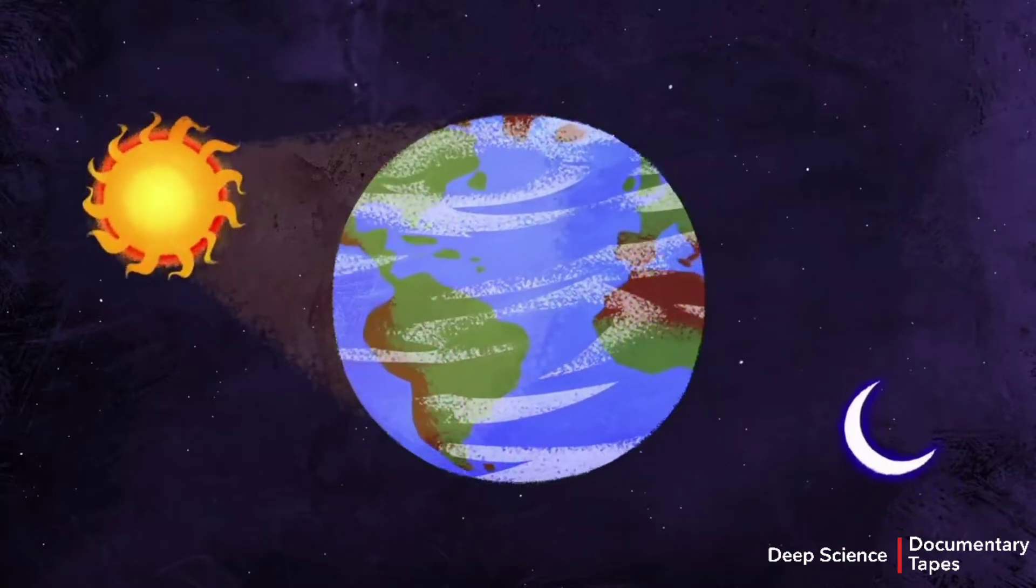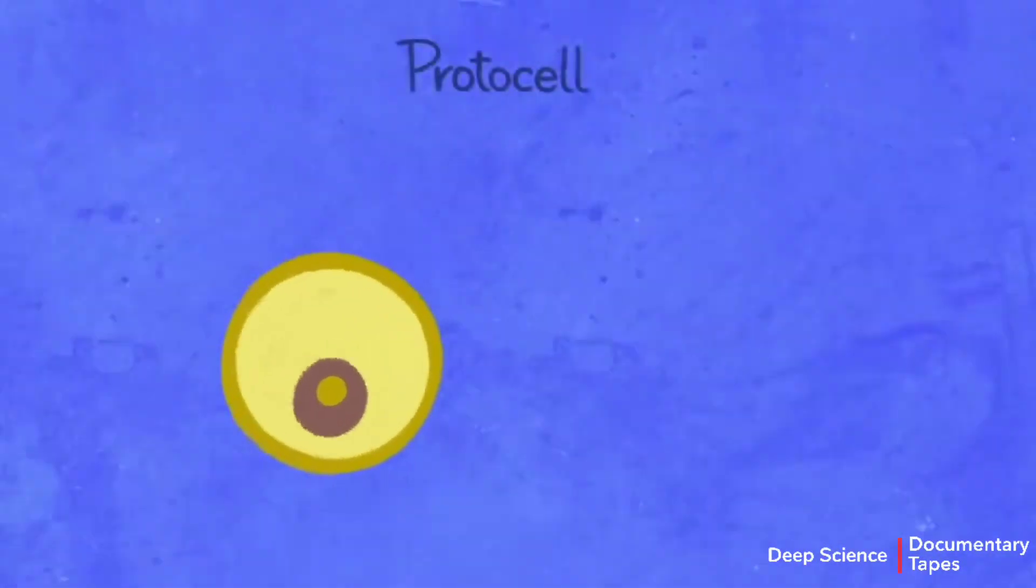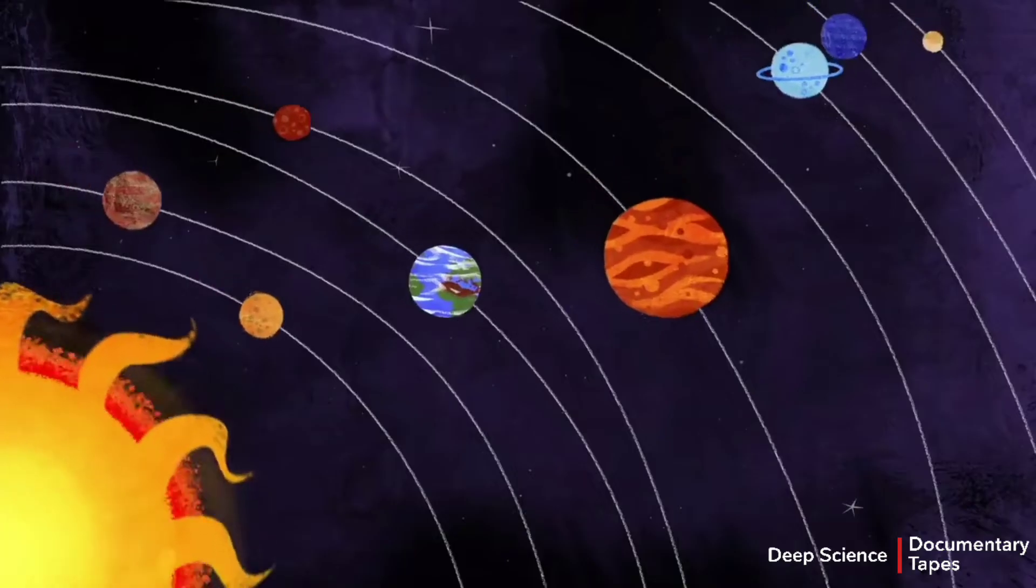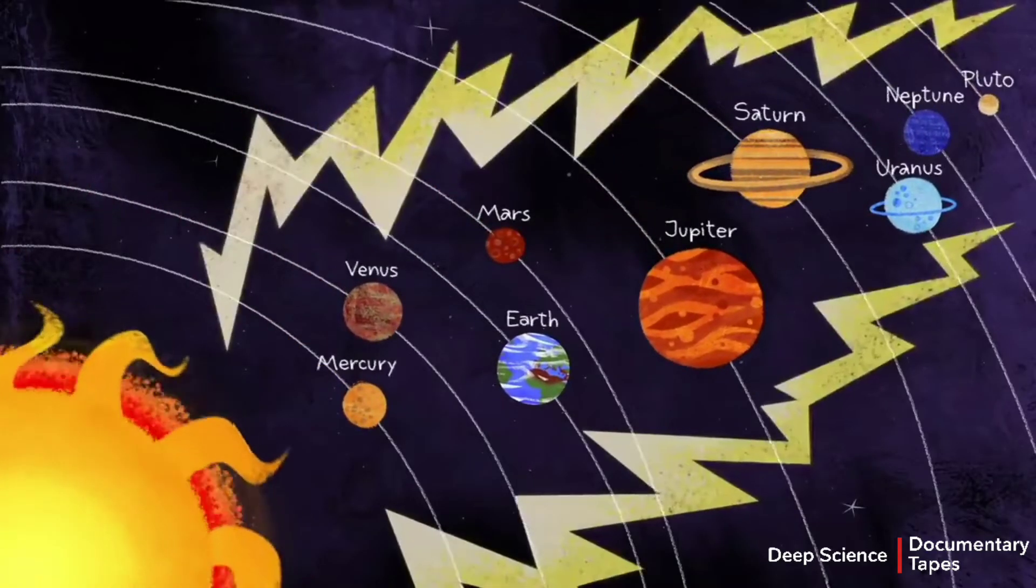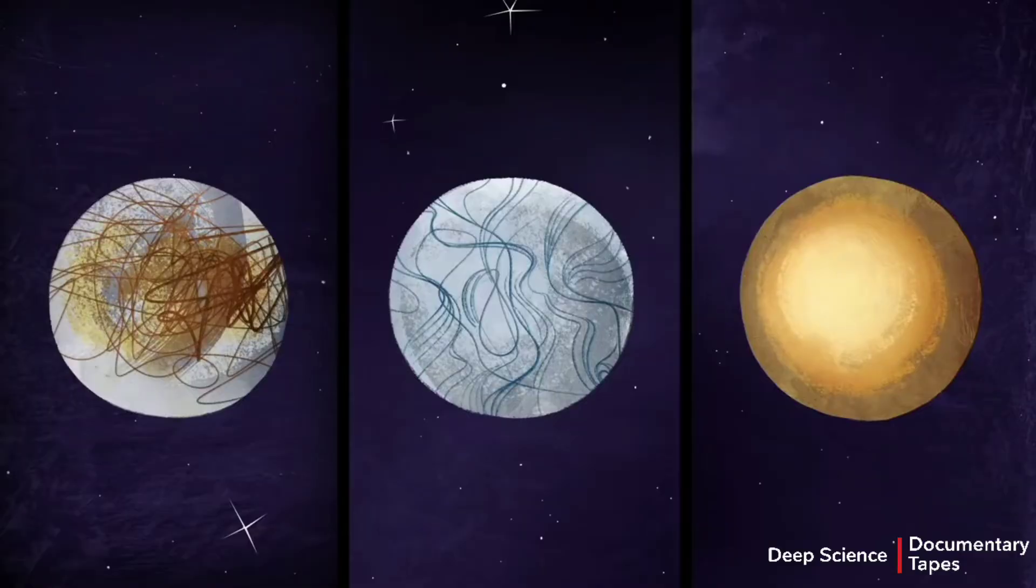On Earth, these and other conditions in aquatic environments may have supported the emergence of life billions of years ago. Tantalizingly, the same could be true in other parts of our solar system, like these three icy moons.